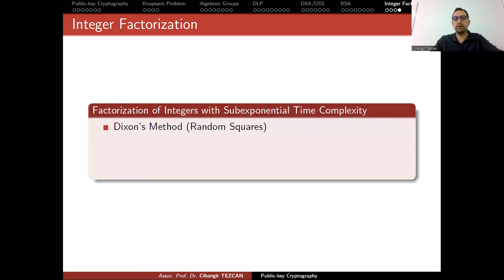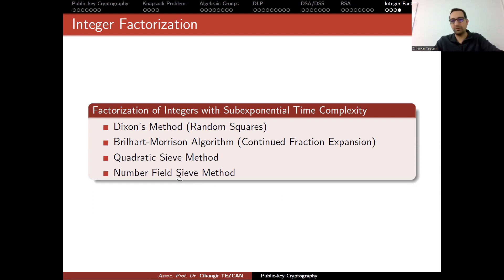We actually have sub-exponential time complexity algorithms which allow us to factorize integers. These are like Dixon's method, which is random squares, Brillhart-Morrison algorithm, continued fraction expansion, quadratic sieve method, and more importantly, number field sieve method.